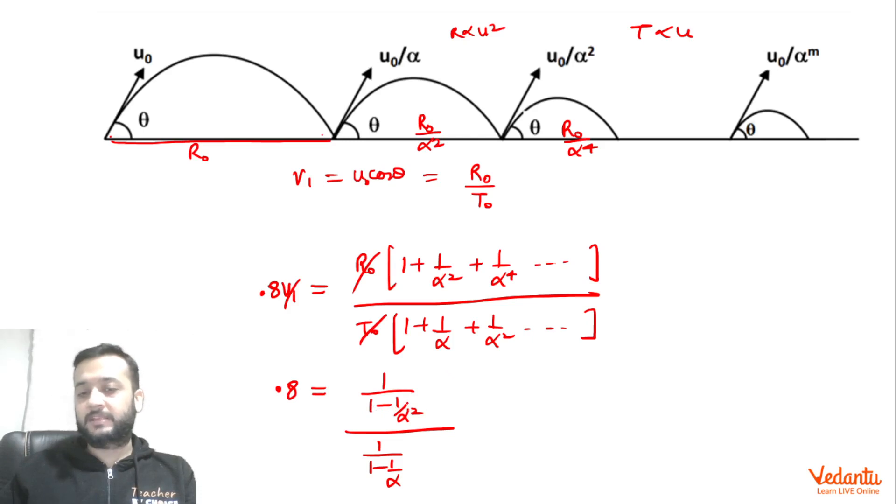So this you can write a² - b² as (a-b)(a+b). So that will become (1 - 1/α)(1 + 1/α). 1 - 1/α will be cancelled out. So this will become 1/(1 + 1/α) which is 0.8. Which means 1 + 1/α is 5/4. So what do we get? 1/α is 1/4 and that means α is 4.